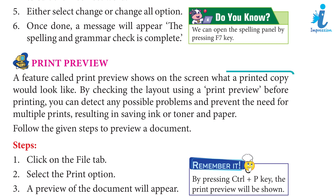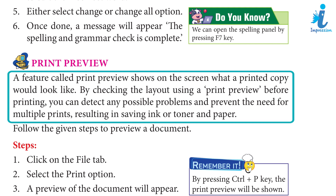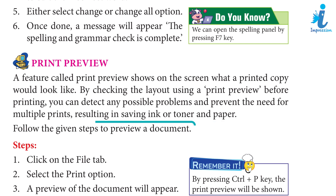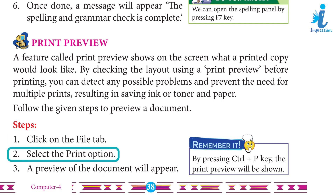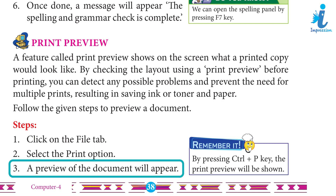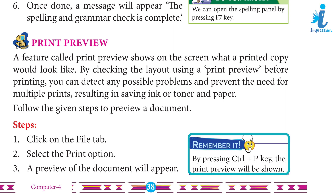Print Preview: A feature called Print Preview shows on the screen what a printed copy would look like. By changing the layout using Print Preview before printing, you can detect any possible problems to prevent the need for multiple prints, saving ink or toner and paper. Follow the given steps to preview a document. Step 1: Click on the File tab. Step 2: Select the Print option. Step 3: A preview of the document will appear. Remember: By pressing Ctrl+P, the print preview will be shown.